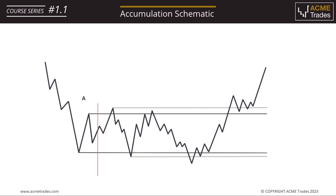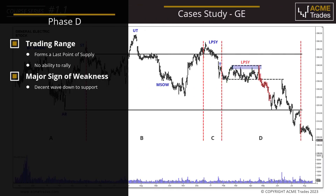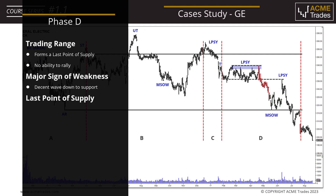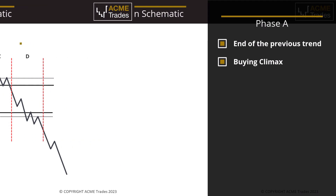In Part 2 we spoke of accumulation and how large operators build a position. In this video we explore distribution, where the smart money — the institutions — build a position to capitalise on lower prices. This is known as shorting the market. Within distribution there are five phases, A to E, and we explore these in detail.